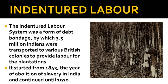Indentured Labour: The indentured labour system was a form of debt bondage by which 3.5 million Indians were transported to various British colonies to provide labour for plantations, mainly sugar. It started from 1843 — the year of abolition of slavery in India — and continued until 1920.